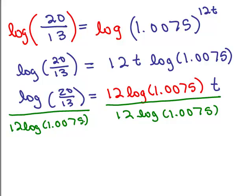I don't do any rounding until this very last step. Keep in mind, this is the log of 20/13 divided by 12 times the log of 1.0075. You can't combine these. These are two separate computations you're going to make to solve for T. Put that in the calculator very carefully with parentheses. Go ahead and try entering this in your calculator and see what you get.